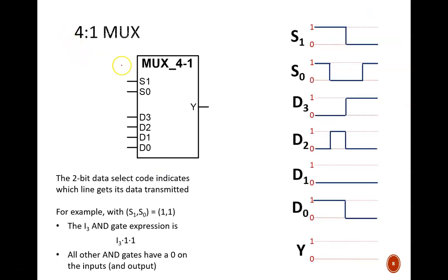Up next is a 4 to 1 MUX. A multiplexer selects one input line to pass its signal through to the output. With four data inputs two select signals are necessary. Pause the video and try to complete the Y waveform.